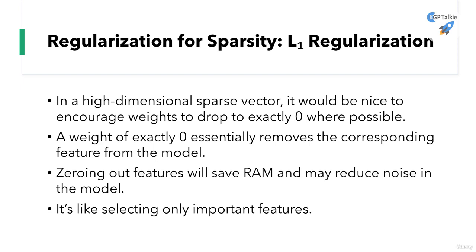A weight of exactly zero essentially removes the corresponding feature from the model - that's feature selection ultimately. Zeroing out features will save RAM and may also reduce noise in the model, and you might end up with better accuracy. It's like selecting only the important features.